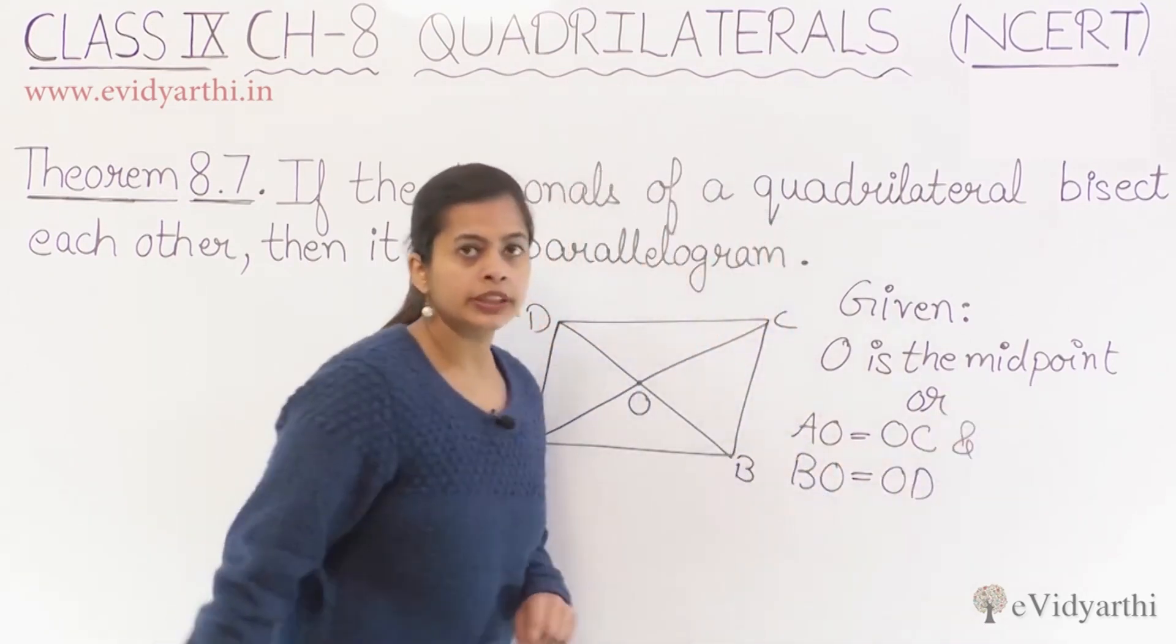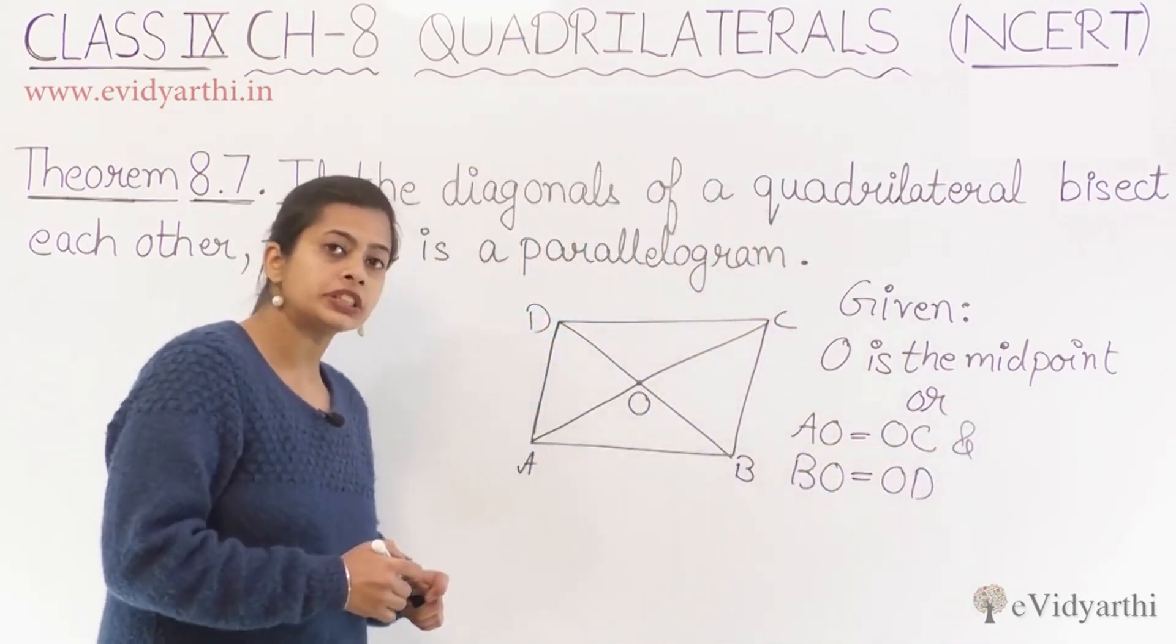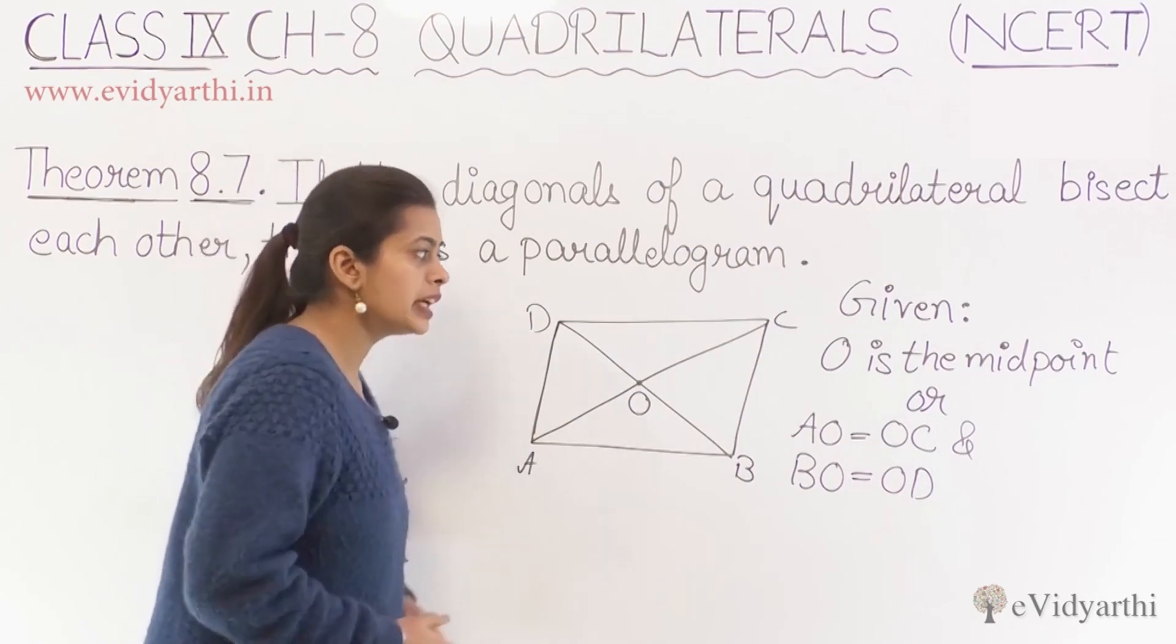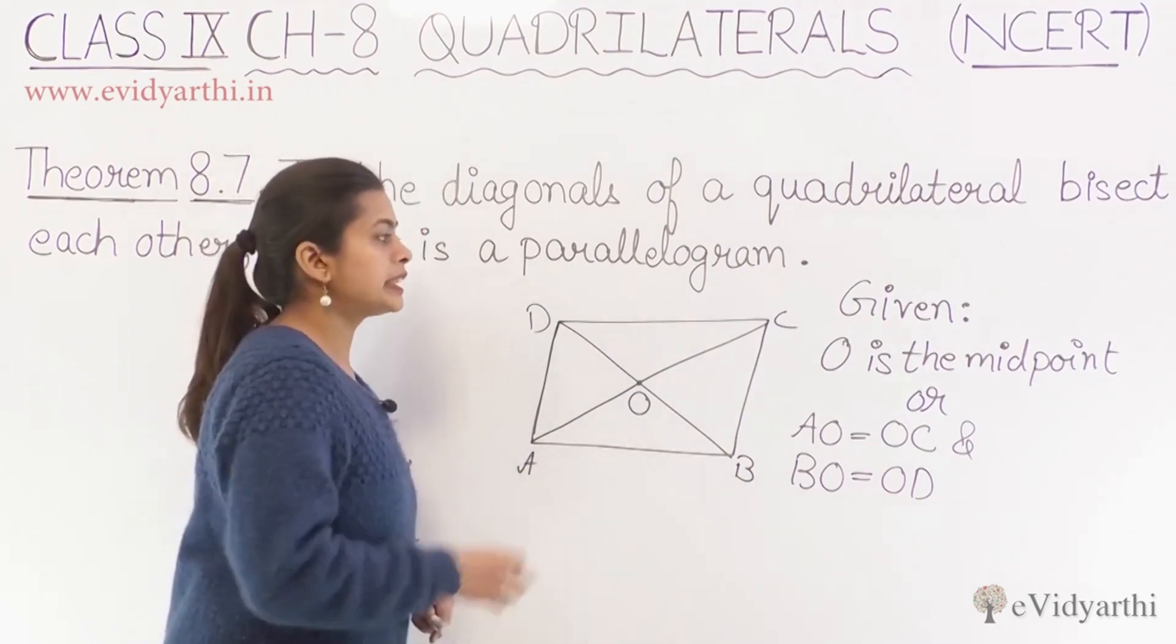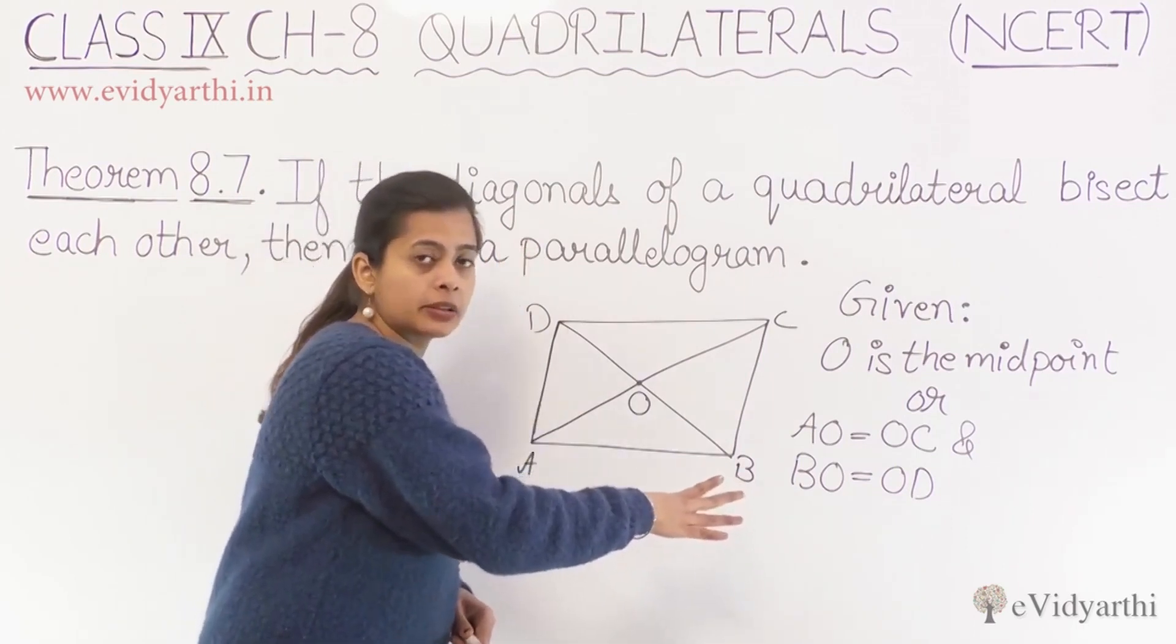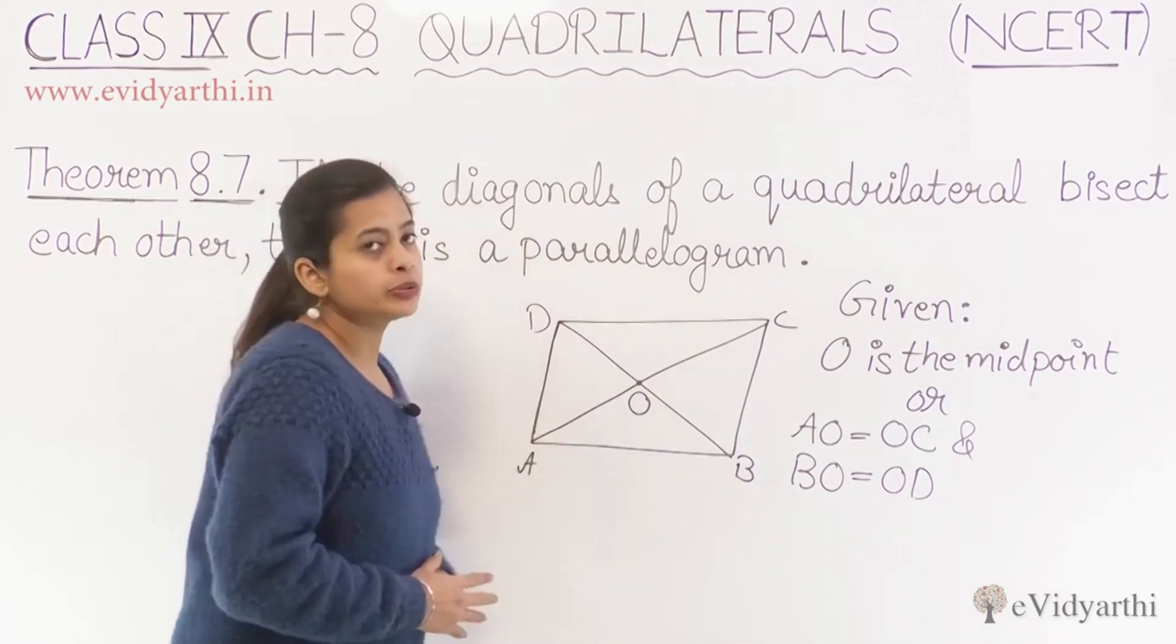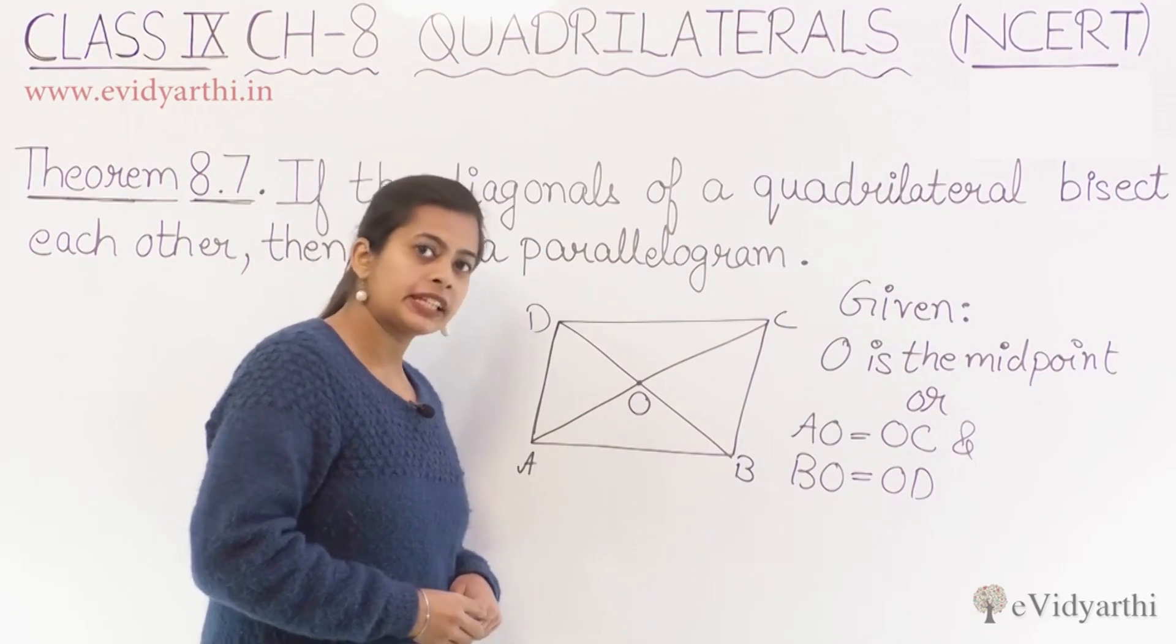If any of these two is possible, if any statement is possible among these two, then we can also prove using this part that the quadrilateral is a parallelogram.